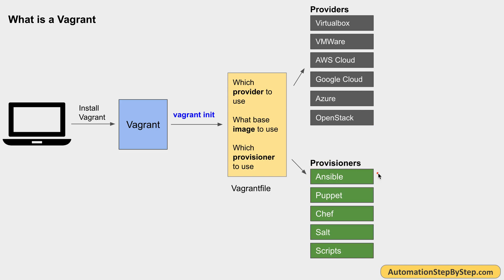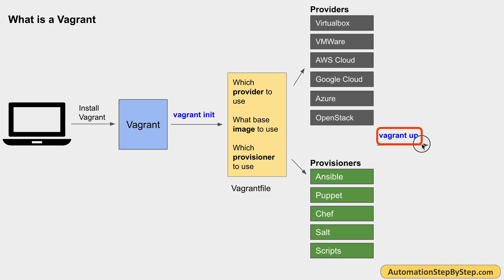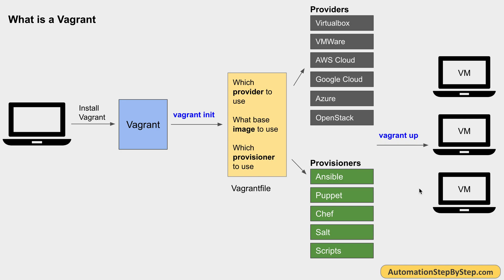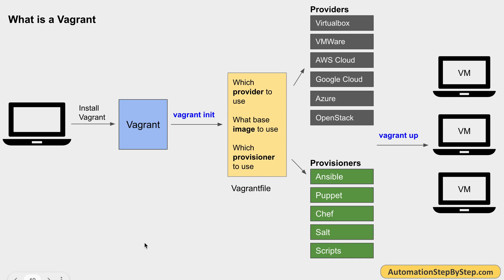For provisioners, we have options like Ansible, Puppet, Chef, Salt, or we can create our own shell scripts. It's not necessary to always use one of those — we can add our own scripts for provisioning. After giving all the information and configuration about the virtual machines in the Vagrantfile, when we run the command 'vagrant up', it will create, set up, and configure all these virtual machines, and then they will be ready to use. So this is how Vagrant works.